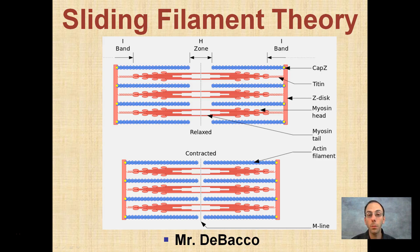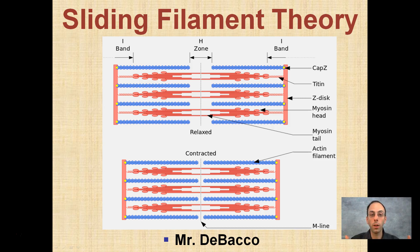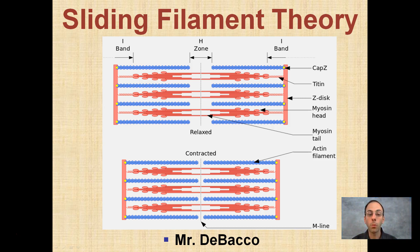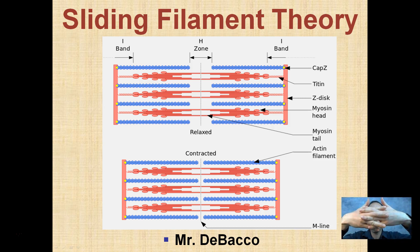I'm going to go over the sliding filament theory, which is very important for muscle contraction. I'll break it down into five basic steps, but first it's important to understand where it got its name. The sliding filament theory gets its name because in order for muscles to contract, the filaments — actin and myosin — essentially slide against one another, forming the contracted phase, while the relaxation phase is when they separate out again.